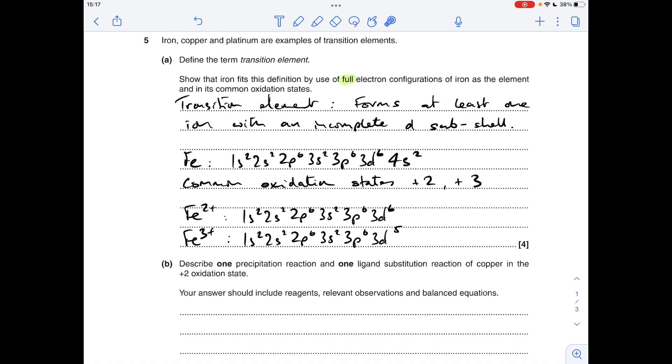So part A, transition element definition, forms at least one ion with an incomplete D-sub shell. Notice it says full electron configuration, so we've got to start right at the beginning, 1s2, etc. So for the element ion, there's your electron configuration, remember 3d and 4s can be either way around.